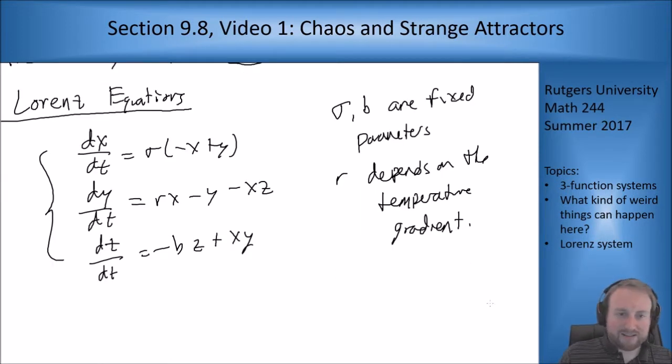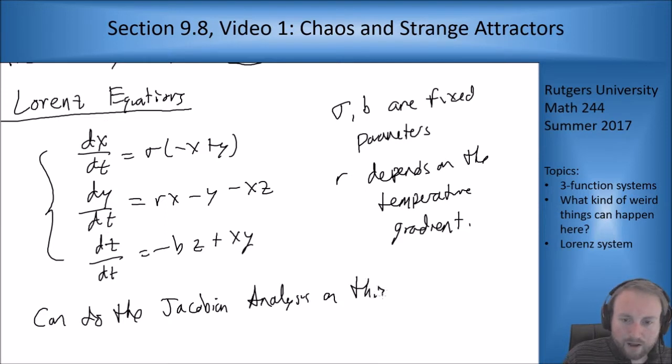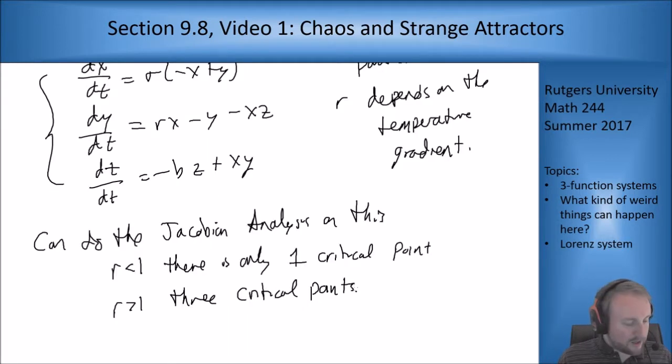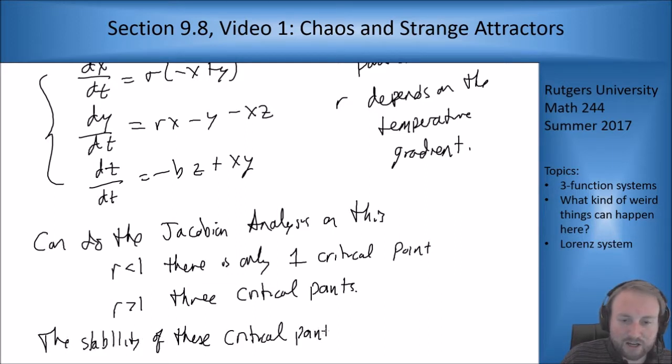So you can do the Jacobian analysis on this. What we end up seeing is that for r less than one, there's only one critical point. And for r bigger than one, I have three. Now the book goes through all the analysis for how you deal with the stability of these guys and figure out what kind of critical points they are. It's a three-dimensional problem, so it's more difficult to solve. The point is the stability of these critical points changes with r.